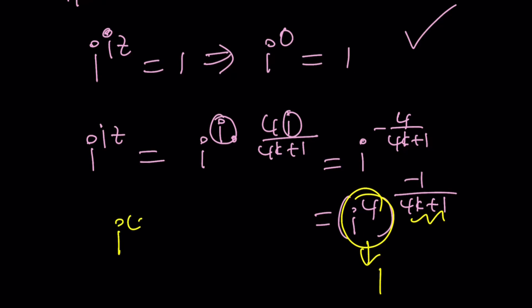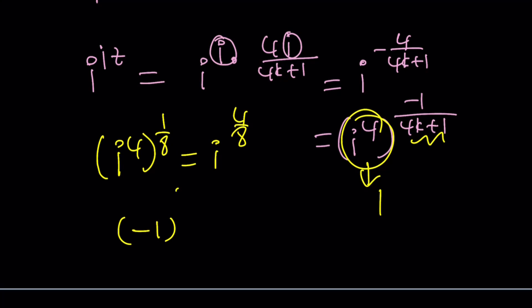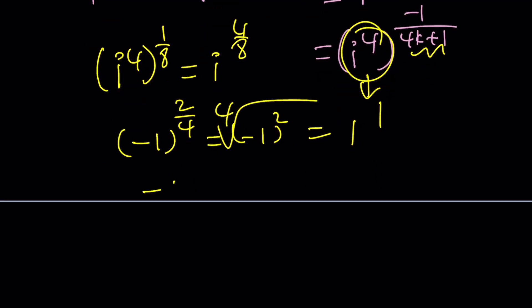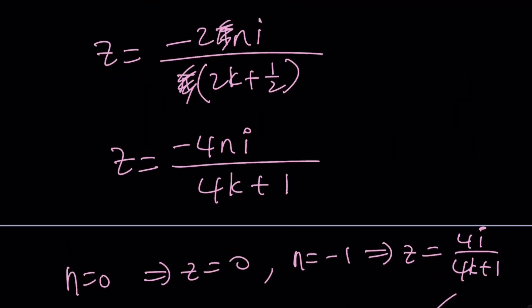For example when you have something like i to the power 4 to the power 1 over 8 it's i to the power 4 over 8. We have this problem in the real world too. For example if I write something like negative 1 to the power 2 fourths is this negative 1 squared and then the fourth root of that, in this case it will be 1. But if you take the negative 1 to the power 1 fourth which is the fourth root of negative number it doesn't exist in the real world. See that causes a lot of problems. But in this case I think our solution should be fine if I didn't make any mistakes.